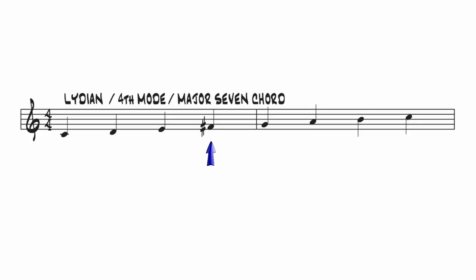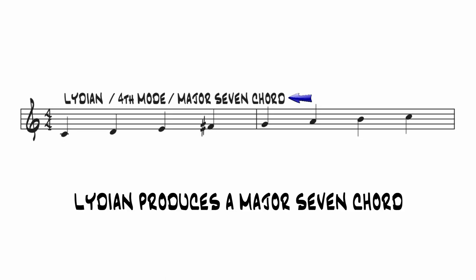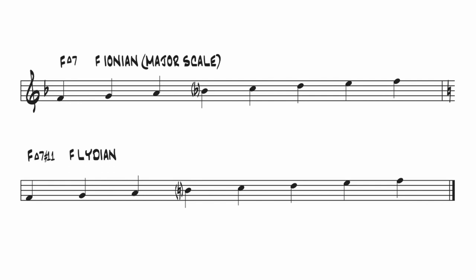Lydian raises the fourth note of the scale, which we could call a sharp 4 or a sharp 11. The chord tones — 1, 3, 5, and 7 — aren't changed, so Lydian produces a major 7 chord, just like the major scale, also called Ionian. Lydian works well over the 4 major chord in any key because the raised fourth note ties the scale to the key. In other words, the B natural in an F Lydian scale is in the key signature of C, but not in the key signature of F.